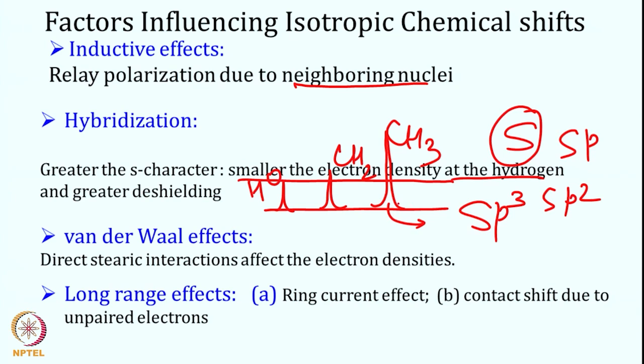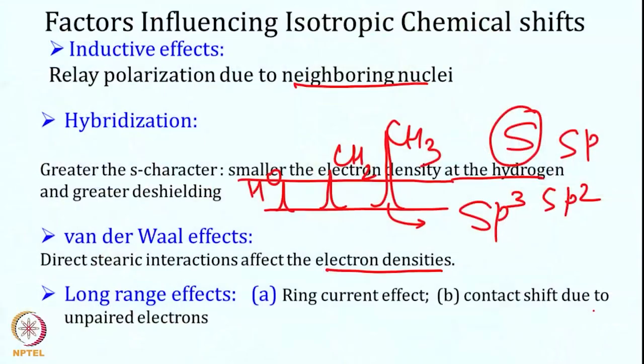The van der Waals effect involves direct steric interaction that affects electron density. When two atoms approach closely, their electron densities influence each other. In a protein, for example, a moiety buried inside versus one exposed to solvent will have different electron densities around the nucleus and therefore different chemical shifts.